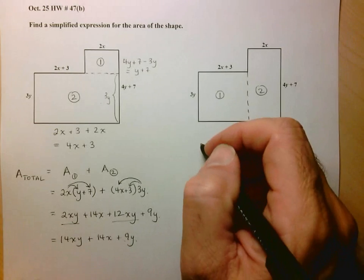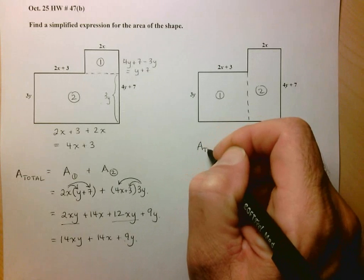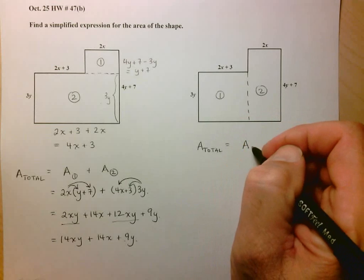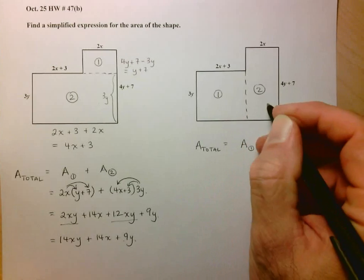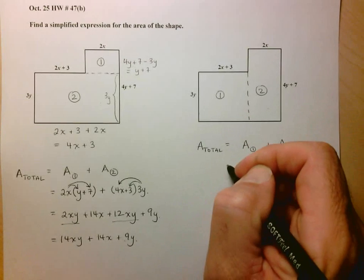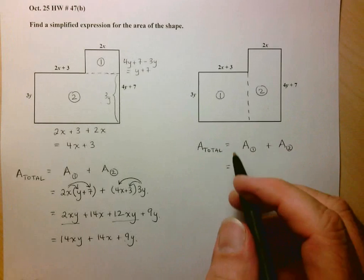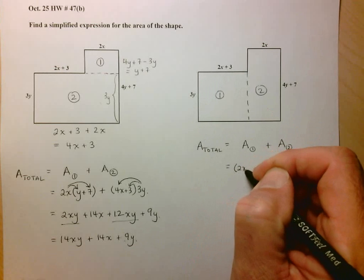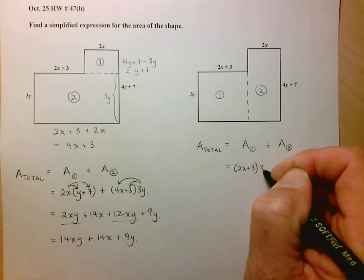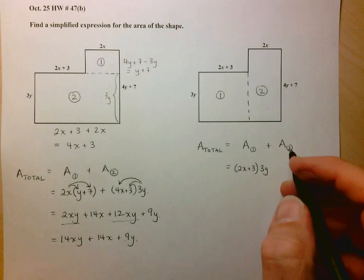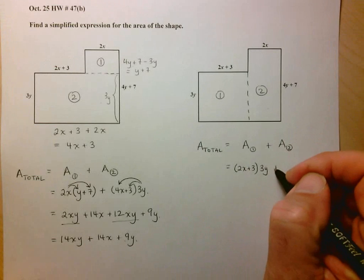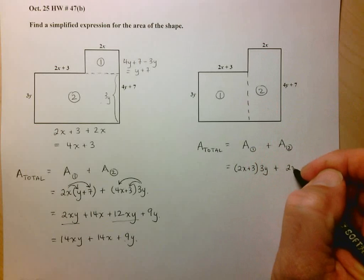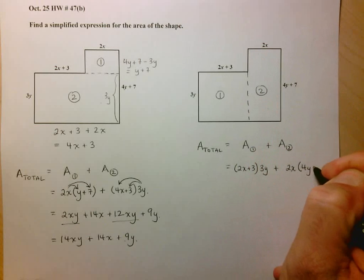Sometimes it doesn't work out so nicely. So let's do it this easier way now and make sure that we get the same answer as before. Again, I'm going to put in my total area is area of this rectangle 1 plus the area of that rectangle 2. And now I go ahead and find the areas. So area 1 is going to be length times width. So 2x plus 3 times 3y. And then here we have plus area 2 which is length times width. So 2x times 4y plus 7.